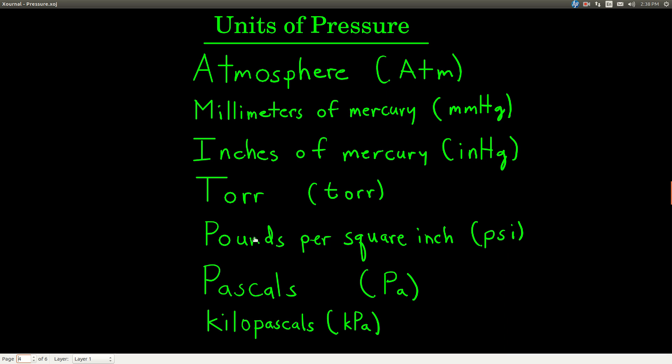Torr, named after the scientist Torricelli. Pounds per square inch, or PSI. You probably see this unit of pressure on the walls of your tire. Pascals and kilopascals. Kilopascals is just 1000 pascals. Remember, kilo means times 10 to the third.